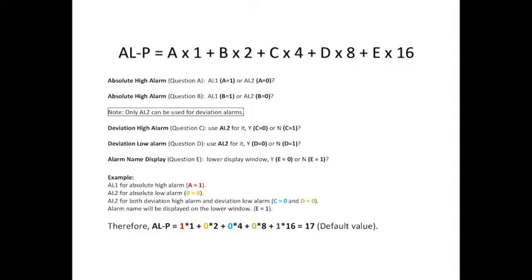For example, I want AL1 to be turned on when the process high alarm is triggered, AL2 to be turned on when the process low alarm is triggered, AL2 to be turned on when either deviation high alarm or low alarm was triggered, and the lower display window always showing my setting temperature instead of the alarm names. This will give values of A equals 1, B equals 0, C equals 0, D equals 0, and E equals 1. Thus, ALP equals 17. So this is how our default value of ALP was calculated.